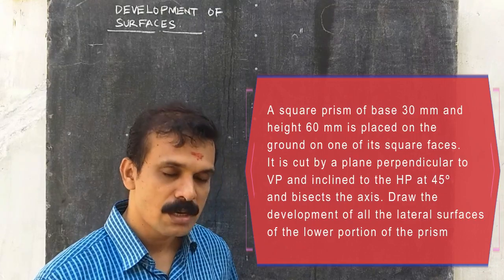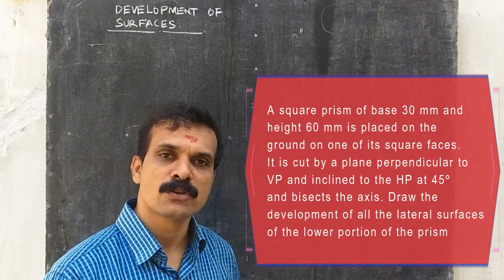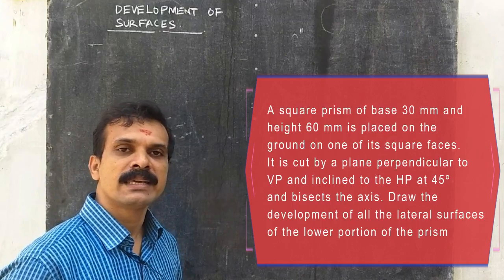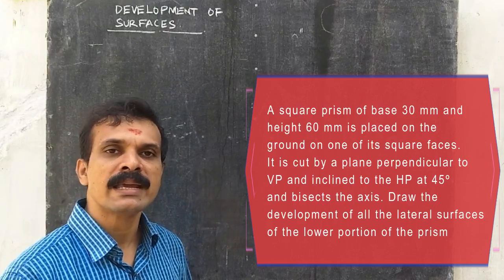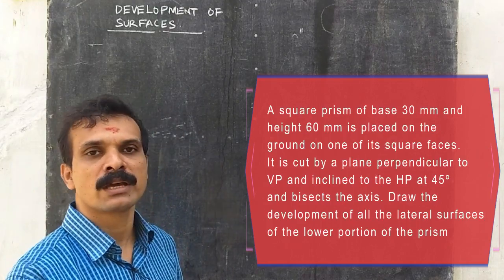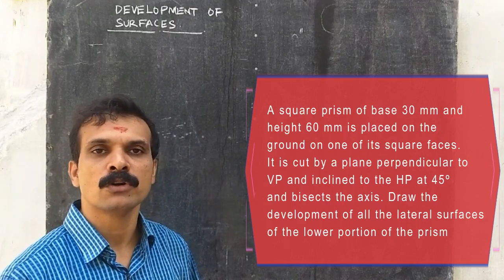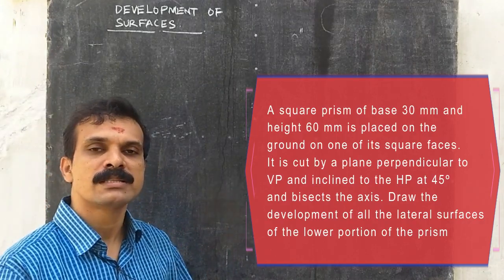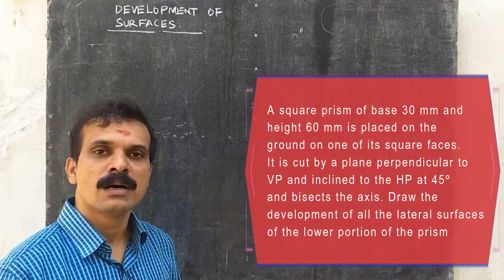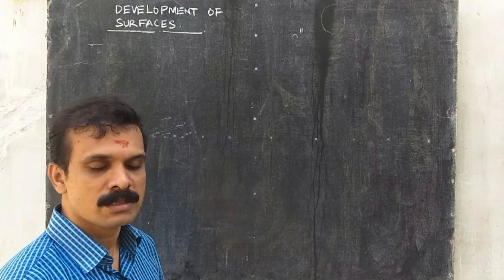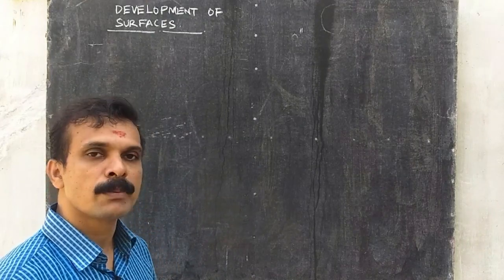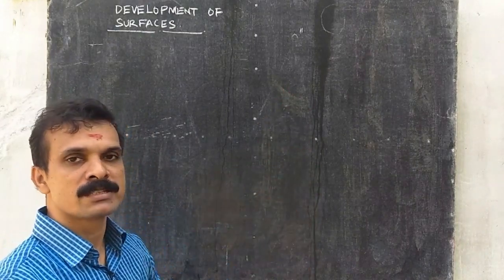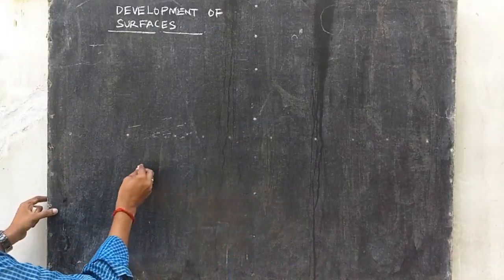In the question, a square prism of side 30 mm and height 60 mm is placed on the ground on one of its square faces. First we have to draw its simple position. In the top view we can see the square, and in the front view we can see its height.